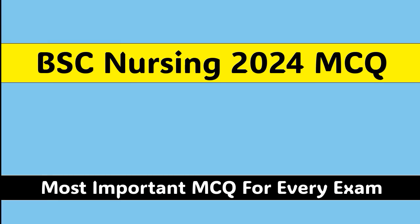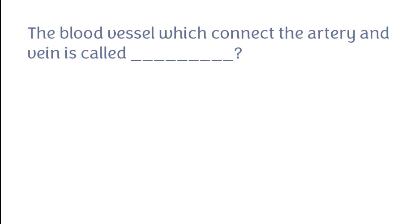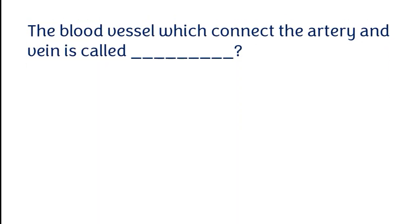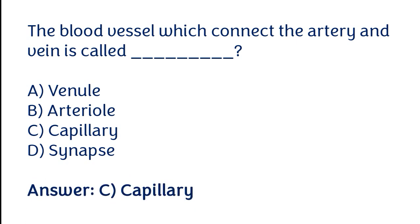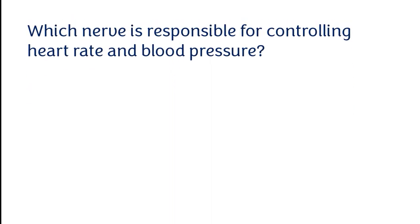Welcome to our channel MCQ1. In today's topic we will cover GCE Nursing MCQ 2024. The blood vessel which connects the artery and vein is called: venule, artery wall, capillary, or synapse. The correct answer is option C — the blood vessel which connects the artery and vein is called capillary.